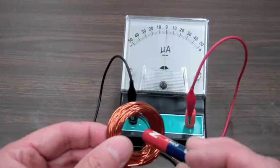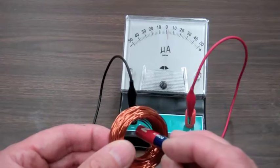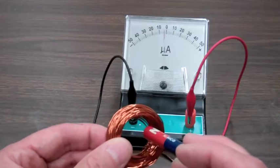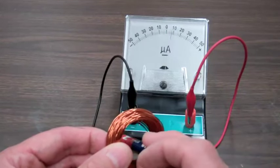If I move the magnet slowly I get a small current and if I move it quickly I get a larger current.